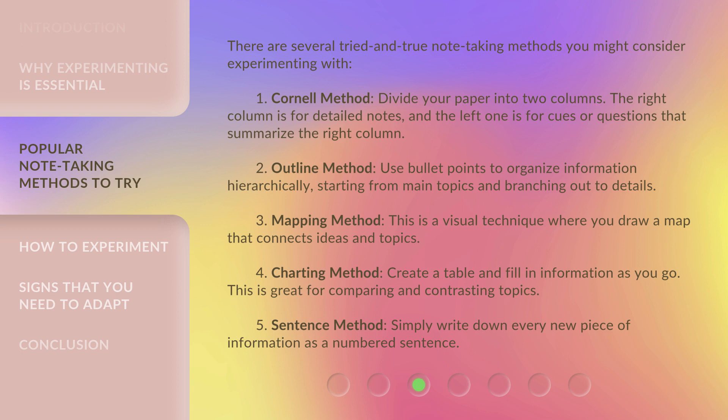Second, the Outline Method: use bullet points to organize information hierarchically, starting from main topics and branching out to details. Third, the Mapping Method: this is a visual technique where you draw a map that connects ideas and topics.